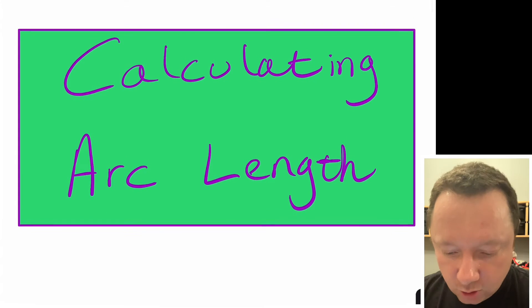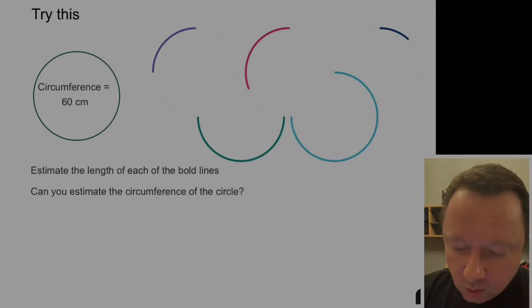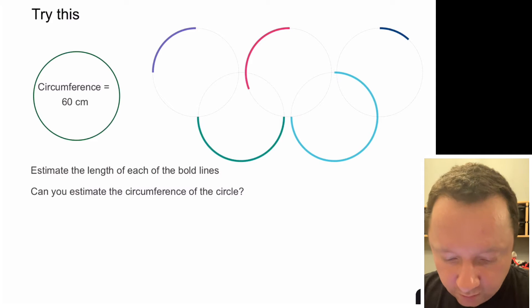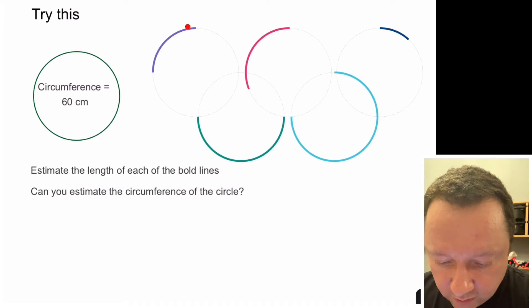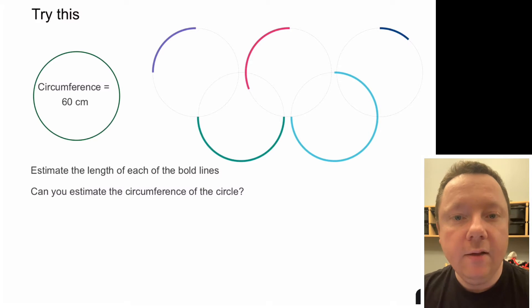First thing we're going to do is just do a small task. We have got a full circle here of a circumference of 60 centimetres. All of these are the same size circle and all you have to do is try and estimate the length of the bold lines just by taking a guess of what fraction of a circle it would be and therefore how big those bits are. Pause the video here and we'll come back in a few minutes to see how you got on.